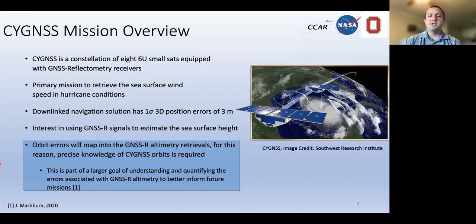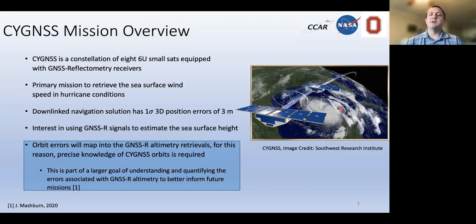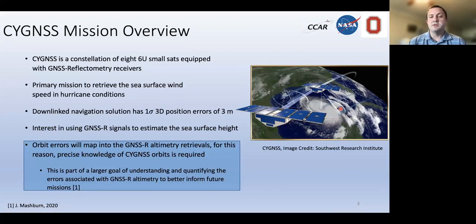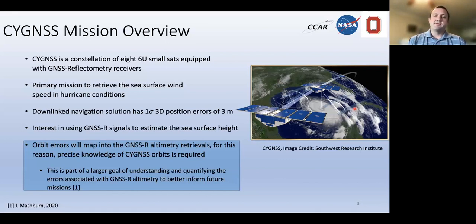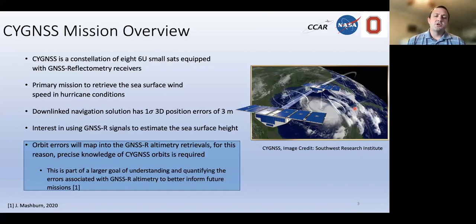The Cygnus mission is a constellation of eight 6U smallsats, each equipped with GNSS-R reflectometry receivers, which can measure reflections off the Earth's surface. They look at the scatter of GPS signals to determine sea surface wind speed and hurricane conditions. As part of that mission, precise orbits aren't required, so all that's available is the navigation solution from the onboard receiver, which has 3D position errors on the order of three meters.